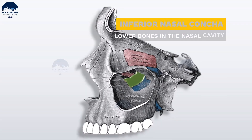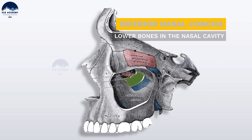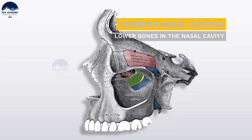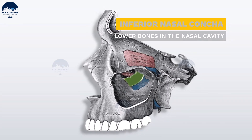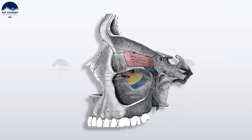Inferior nasal concha. Inferior nasal conchae are two lower bones in the nasal cavity. They provide rapid warming and humidification of air as it passes to the lungs.